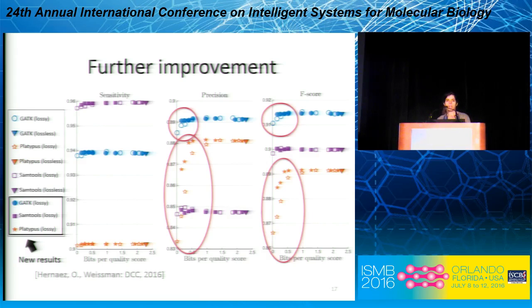Something worth noting is that because of the variability introduced by the lossy compressor, sometimes the performance actually comes out better than that achieved by lossless compression. This makes sense because quality scores are noisy and are not used in an optimal way by the variant callers. However, it's not clear for which rate you will get an improvement — you really need to run the pipeline and get a sense.